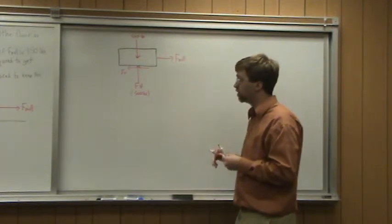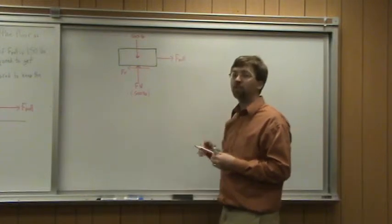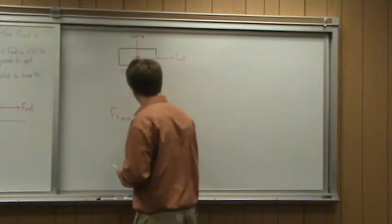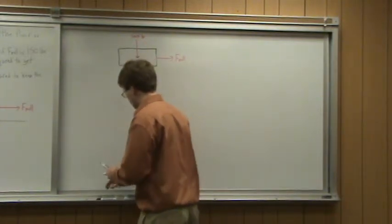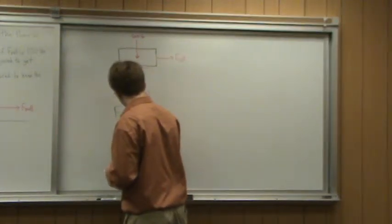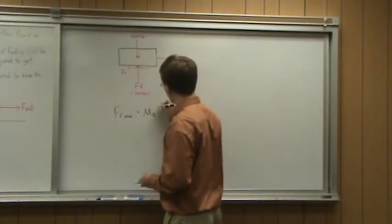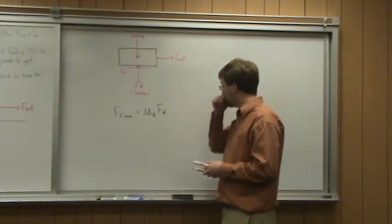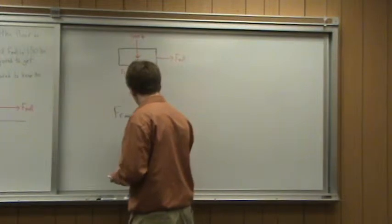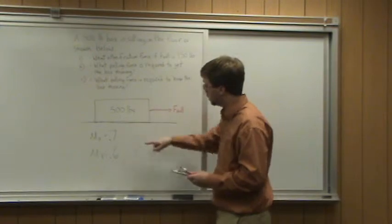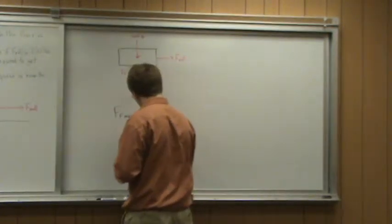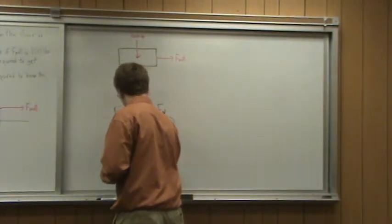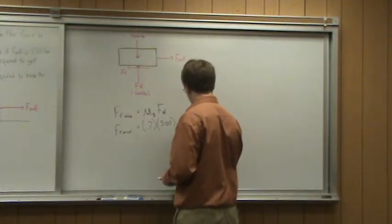If F-pull is 150 pounds, we need to figure out what is the maximum friction force this surface can sustain before it starts sliding. That FF-max is going to be equal to the static coefficient of friction times the normal force. The normal force is equal and opposite to the weight, so it's 500 pounds. This gives us 0.7 times 500, which ends up being equal to 350 pounds.